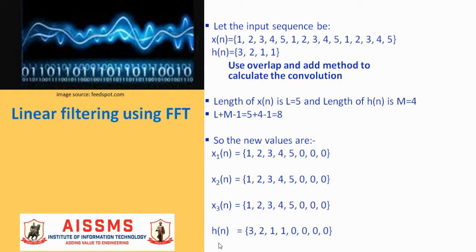For h(n), we need to pad L minus 1 number of zeros. So L is 5, L minus 1, 4 zeros are appended at the end of impulse response h(n) to make its length 8. So h(n) is 3, 2, 1, 1, 0, 0, 0.